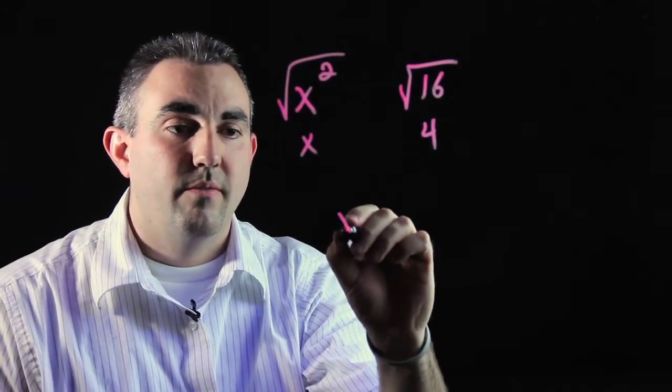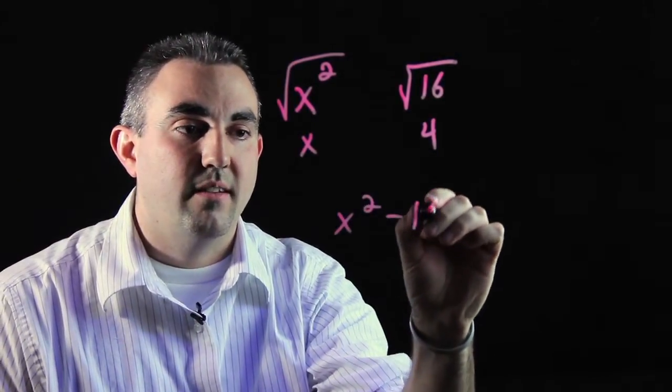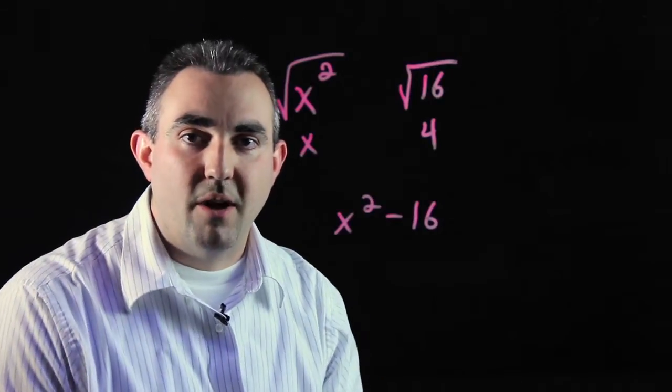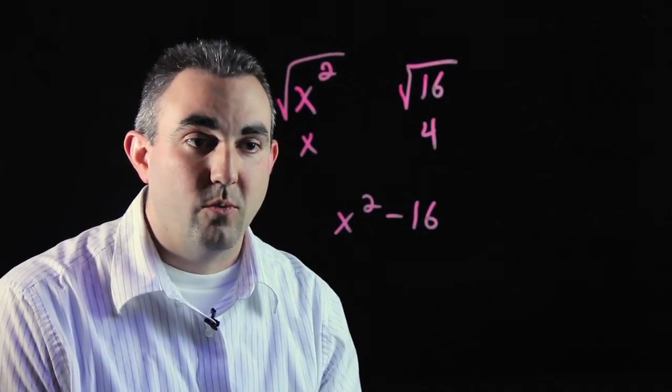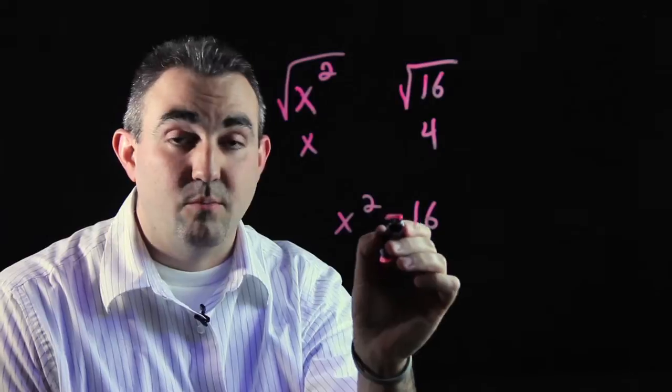Let's put that together now. x squared minus 16. We want to factor this polynomial using the difference of two squares. Difference meaning it's a subtraction problem.